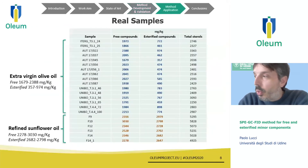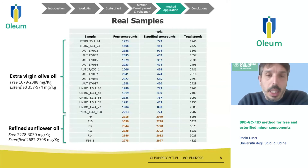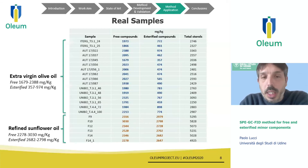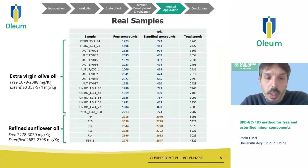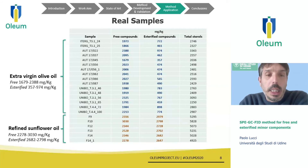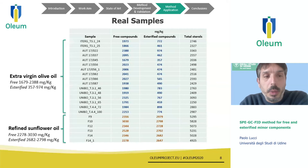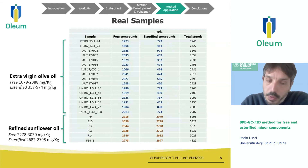We also applied the method to a large number of samples — including legal and illegal samples. Here we have an example of the results obtained by analyzing 15 pure extra virgin olive oils collected in different countries across Europe within the project, and five refined sunflower oils purchased at the market. What we can say, looking at this data, is that there is basically no difference between the content of free compounds in extra virgin olive oil and refined sunflower oil — the levels are quite similar.